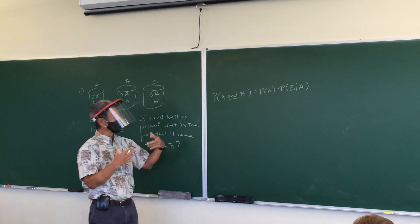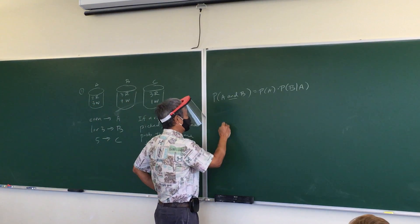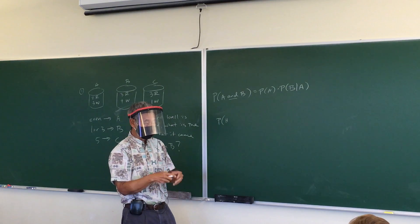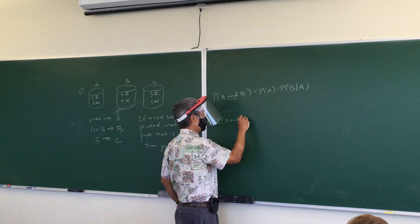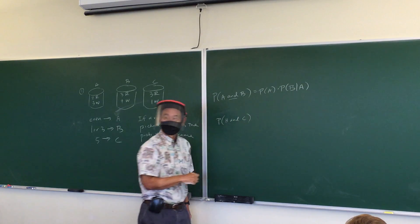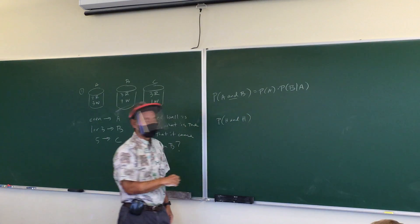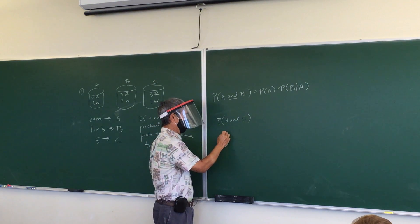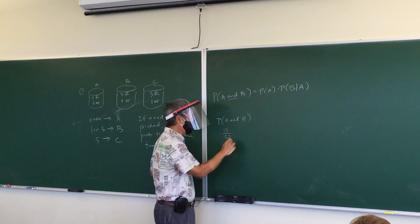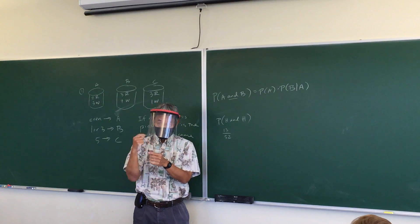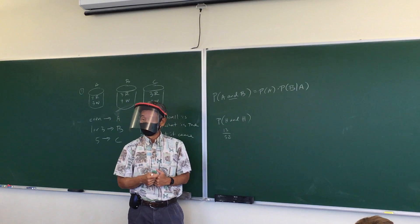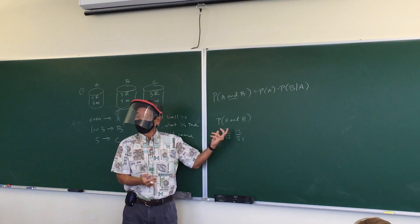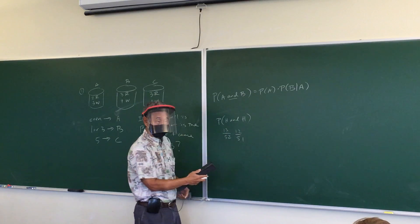You guys already naturally do this without thinking about it. For example, if you're playing cards, what's the probability of getting a heart on the first draw and a heart on the second draw? The probability of pulling out a heart on the first card is 13 out of 52. Then, the probability of pulling out another heart knowing you already pulled one is 12 out of 51. That's an example of this — you're multiplying those together.